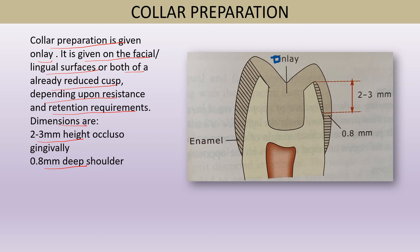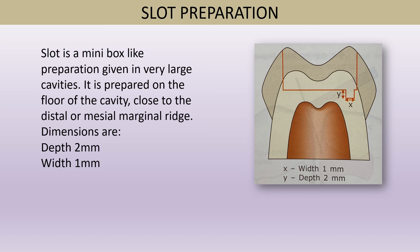Slot preparation is a mini box-like preparation given in very large cavities, prepared on the floor of the cavity close to the mesial or distal marginal ridge. Its dimensions are 2 millimeter depth and 1 millimeter width. This position is chosen to prevent pulpal exposure, prevent removal of dentine supporting the enamel, and prevent perforation of tooth at the base of the slot. These are the secondary resistance and retention features which can be given in cast metal inlays.